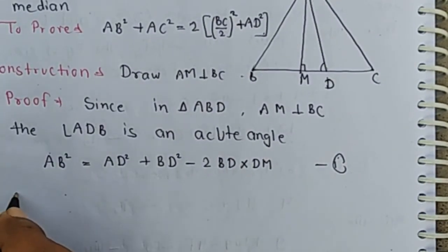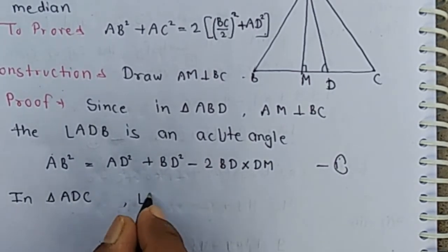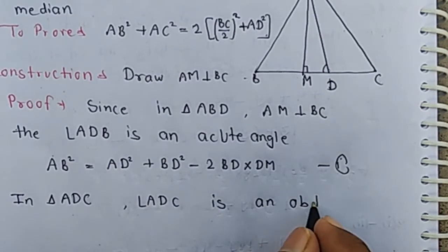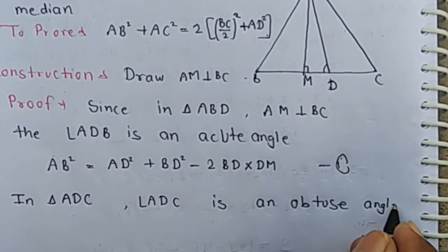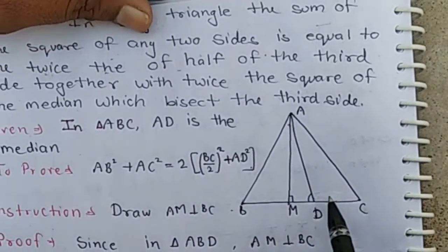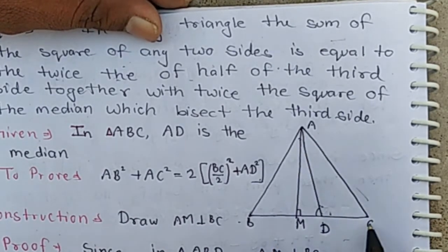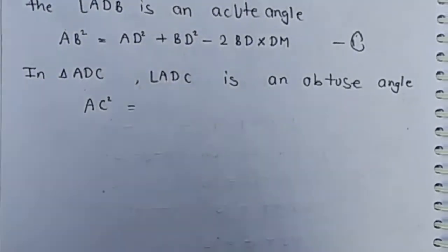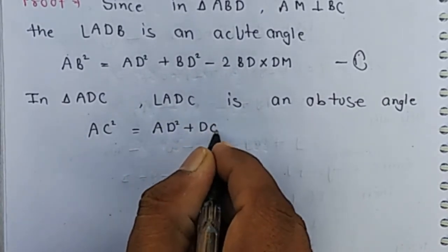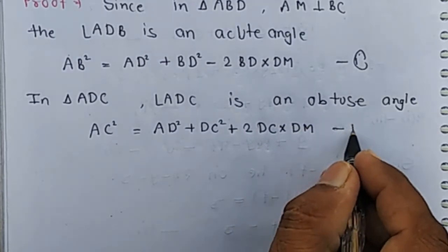Now in triangle ADC, angle ADC is an obtuse angle. By the obtuse angle triangle theorem we have: AC² = AD² + DC² + 2·DC·DM. This is equation 2.